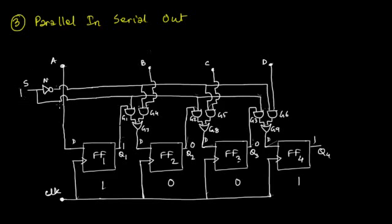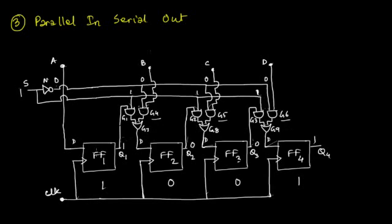Whenever line S is set to logic 1, gates G1, G2, and G3 are enabled. The output of NOT gate N is now logic 0, so one input of AND gates G4, G5, and G6 is set to logic 0, meaning G4, G5, and G6 are disabled. The output of flip-flop 1 — line Q1 — is containing the bit 1 which is stored by flip-flop 1.